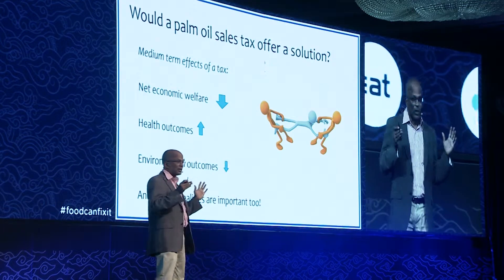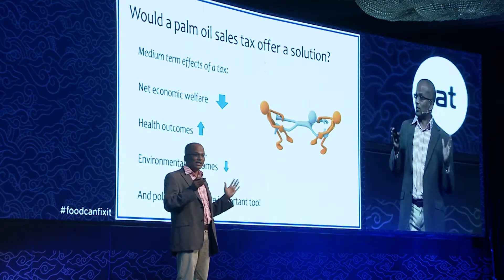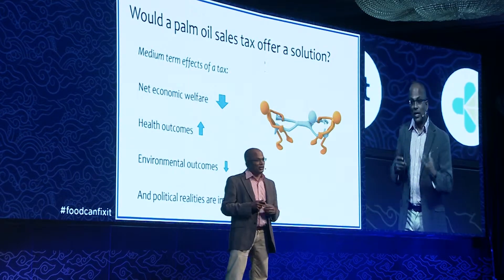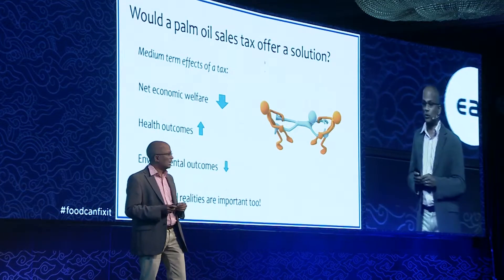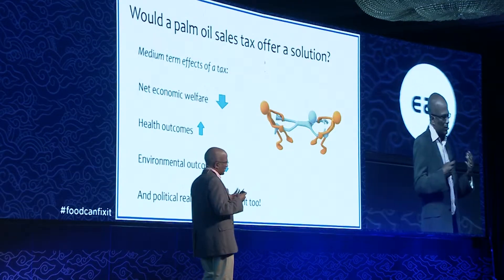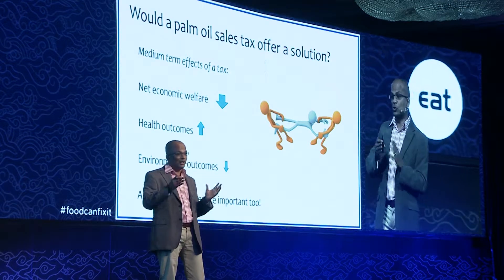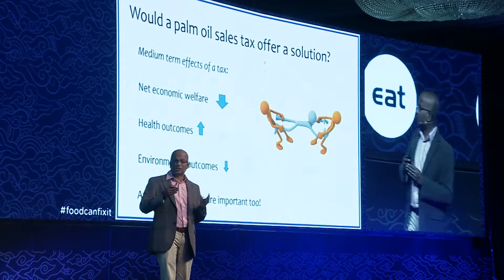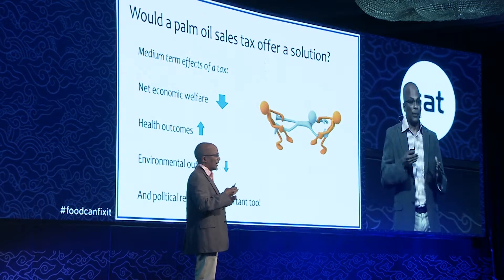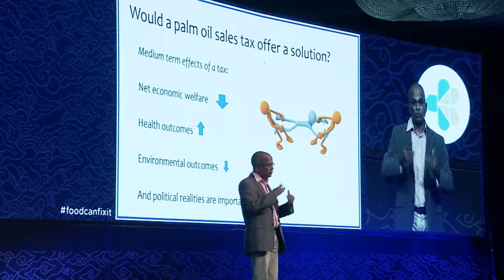One very popular policy measure currently around global food systems is what we call fat taxes — taxes related to health based on individual foods. Many countries are experimenting with sugar taxes and soda taxes. What if Thailand had a substantial palm oil tax? When we put this through our simulation models, we find that over the next 20 years or so, this tax would result in a fairly substantial reduction in net economic welfare. The tax would disincentivize oil palm production, so producers lose out, and consumers face more expensive food — net economic welfare goes down.